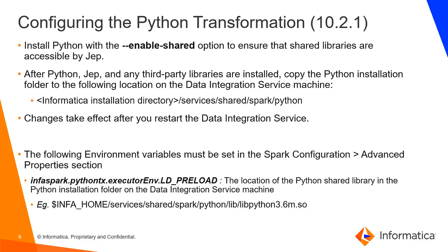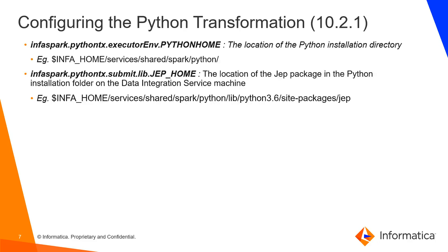Next, we need to set some properties in the Spark configuration advanced properties. The first is infraspark.python.dx.executor.env.ld_preload, which is the location of the Python shared library on the DAS machine. The second is the executor env Python home, which is the location of the Python executable. The third property is python.dx.submit.lib.jep_home — the location on the DAS machine where the JEP package is installed within Python.